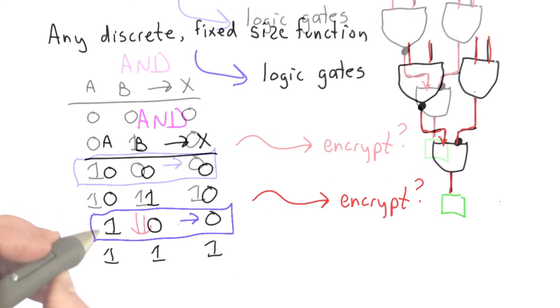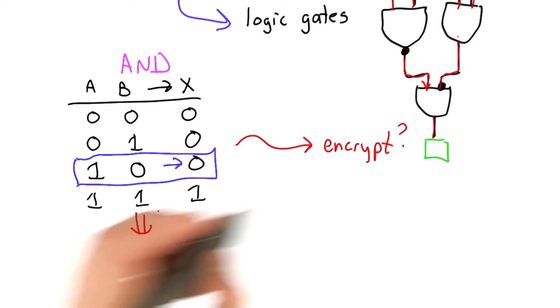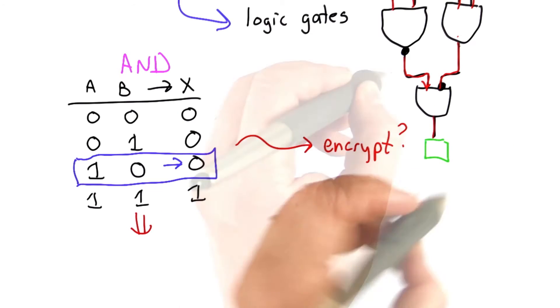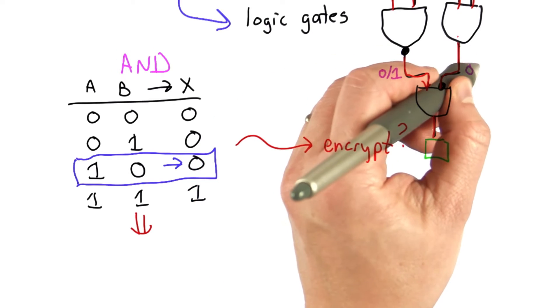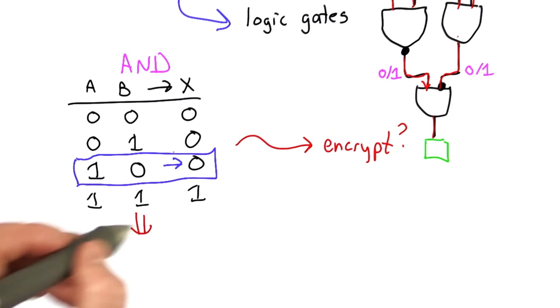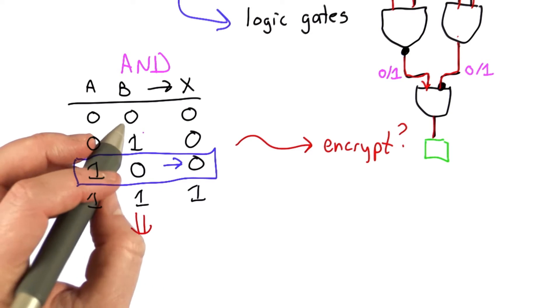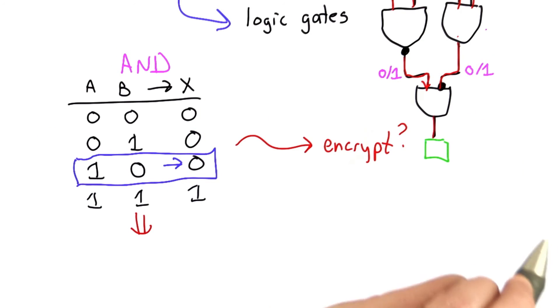Our first step to creating an encrypted circuit is to replace the inputs with encrypted values. That means we need some way to represent a 0 on this wire and some way to represent a 1. Same for this wire. We're going to replace these 0s and 1s in the table with encrypted values. We'll look at those as random nonces.